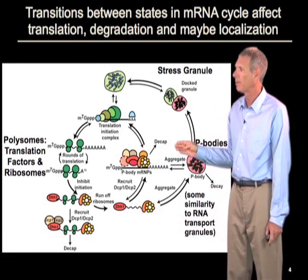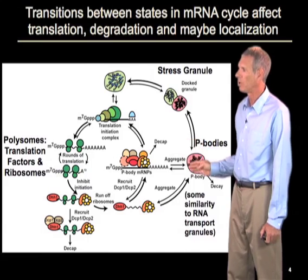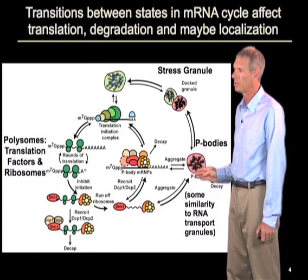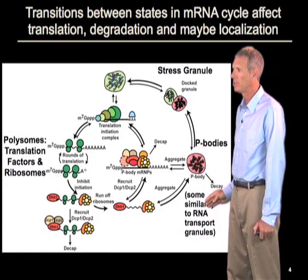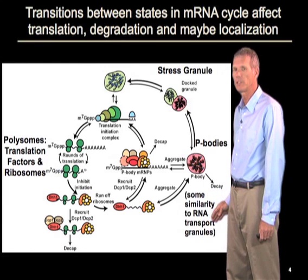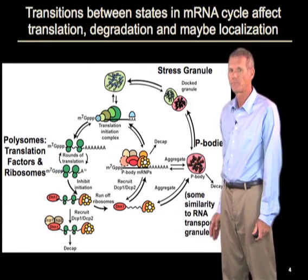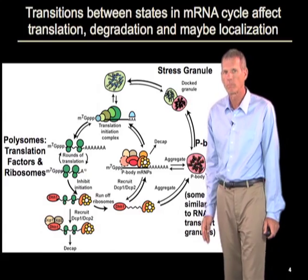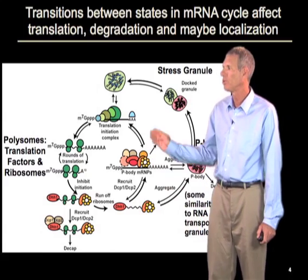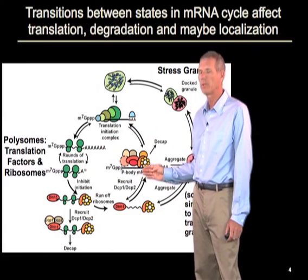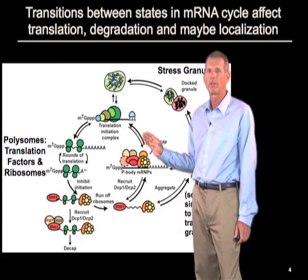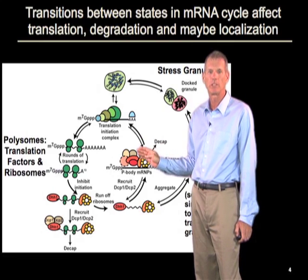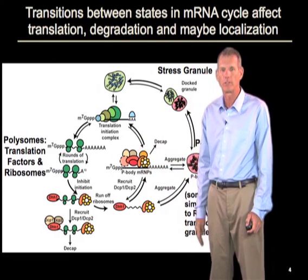Moreover, we also think that this might play some role in localization, because these components in these p-body structures actually show similarity to RNA transport granules in a variety of different cases. So this cycle probably plays a significant role in the regulation of translation, degradation, and localization of mRNAs in cells.